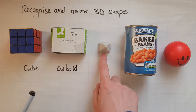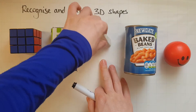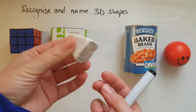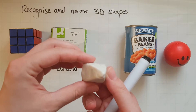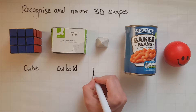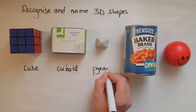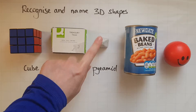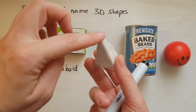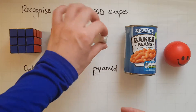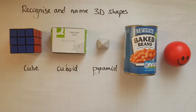The next one we'll look at is this shape which we call a pyramid, like the pyramids of Egypt. A pyramid is pointy at the top. So: pyramid, pointy — that should help you remember it, and also the pyramids of Egypt.